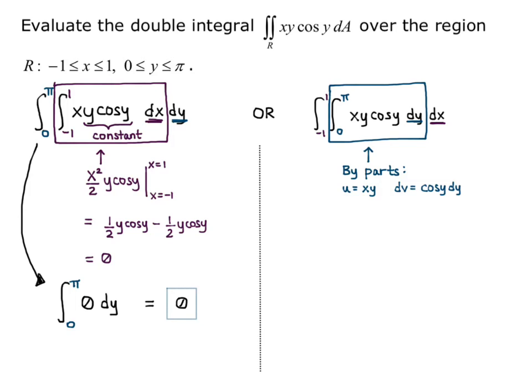Now to find du, I take the derivative with respect to y. So I get du equals x dy. And v equals sine y, the anti-derivative of cosine y.